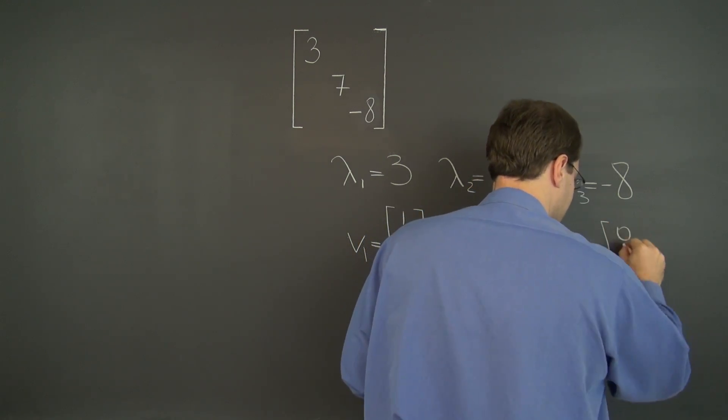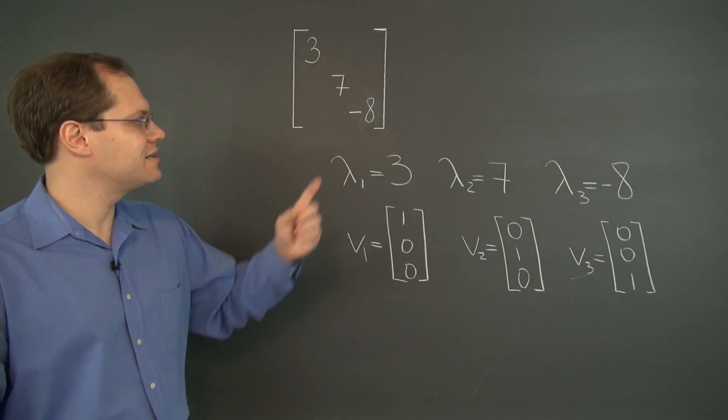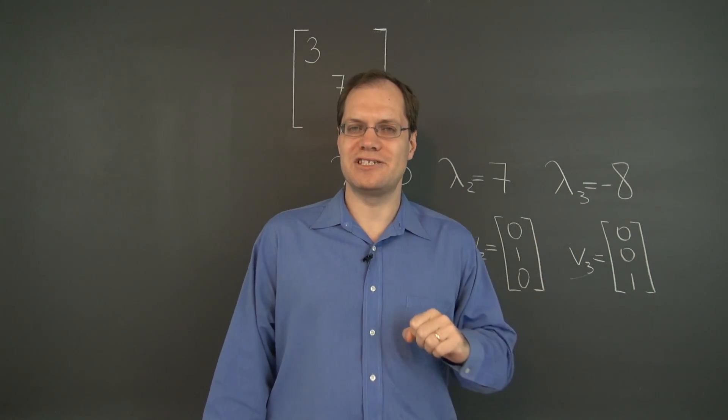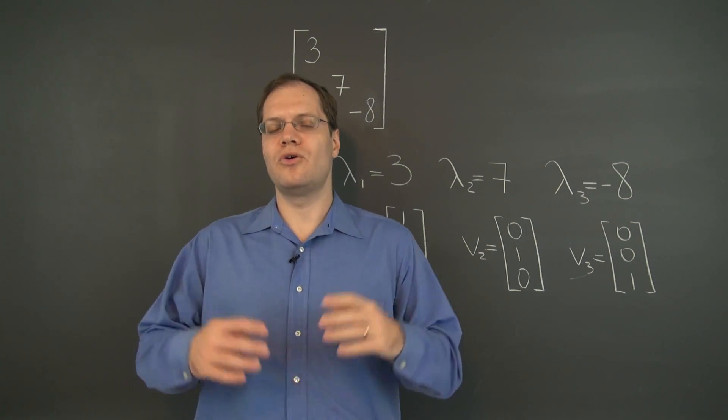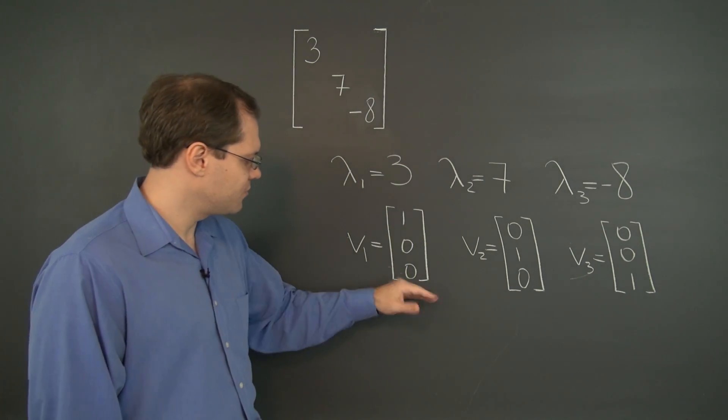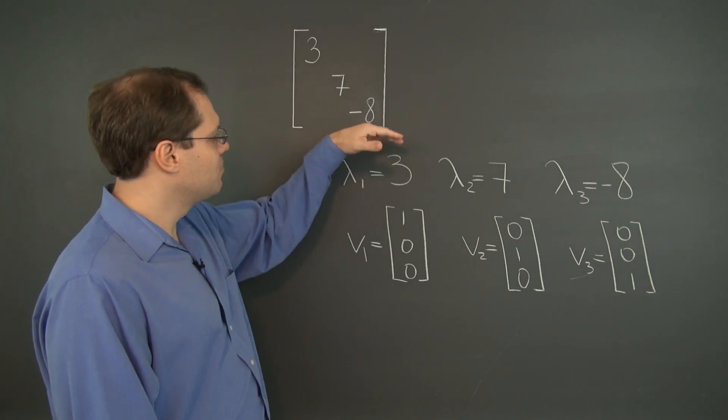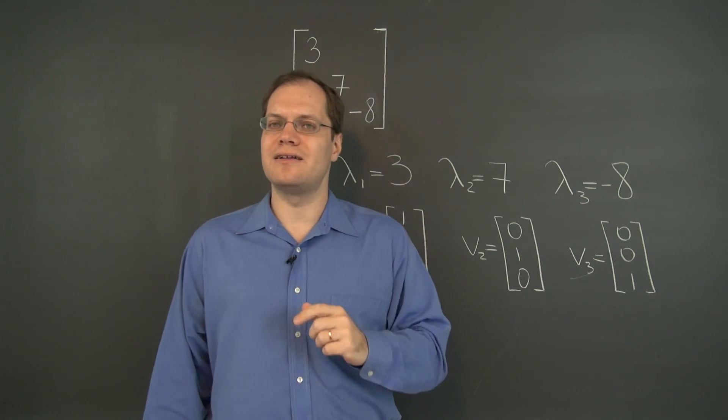So for diagonal matrices, eigenvalues are right there on the diagonal and eigenvectors are our dream decomposition vectors. You may call this the standard basis for R3 or Rn in general. You can also call them R pivot columns if you so choose. But there you go. So these are the eigenvalues and eigenvectors of a diagonal matrix.